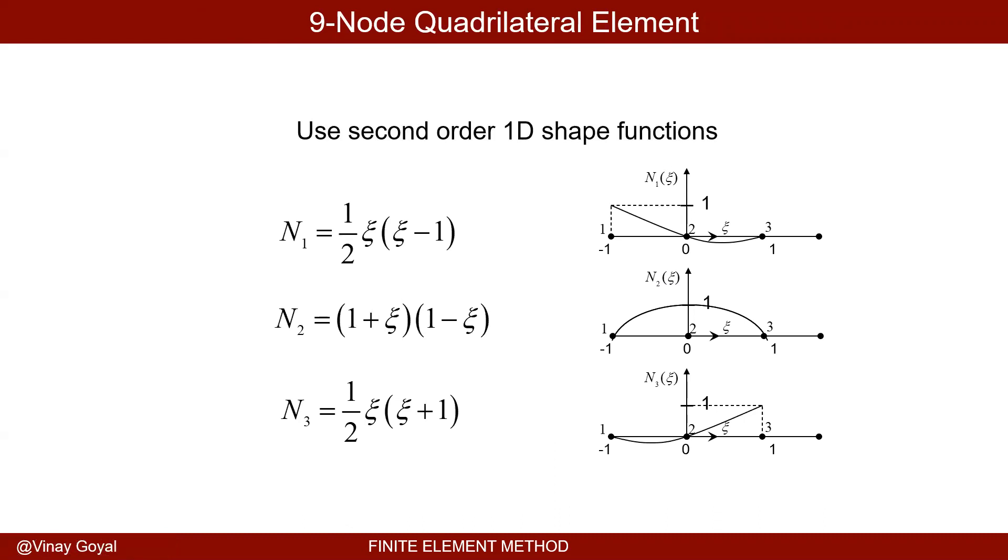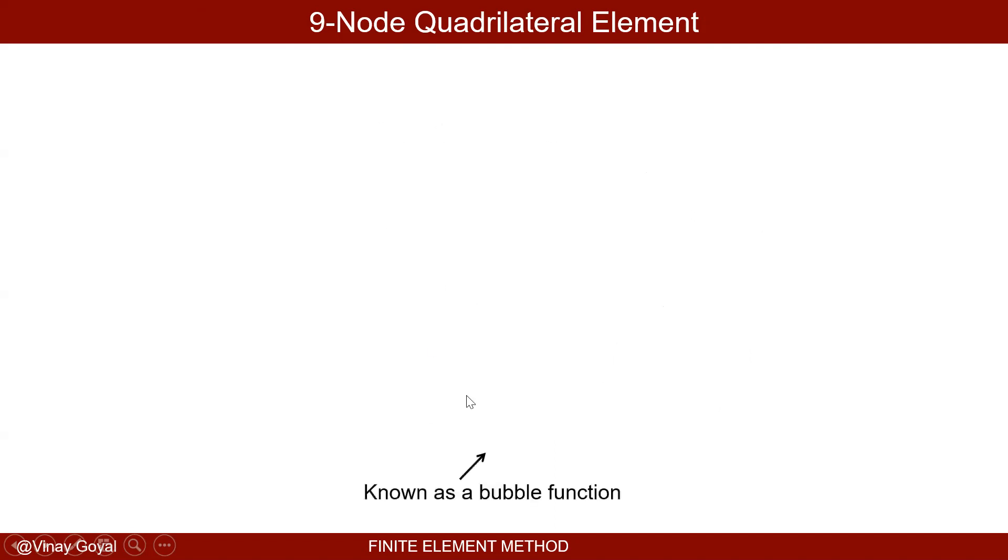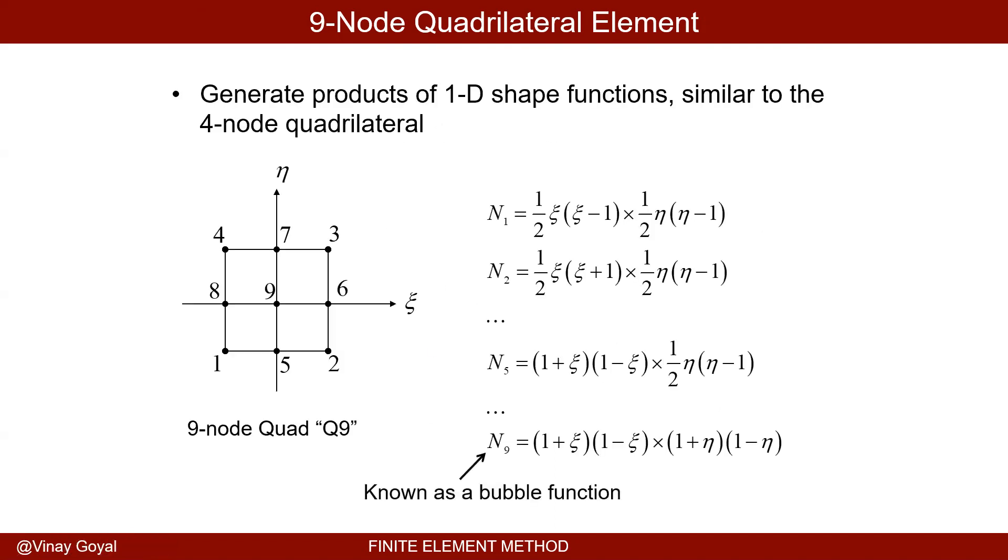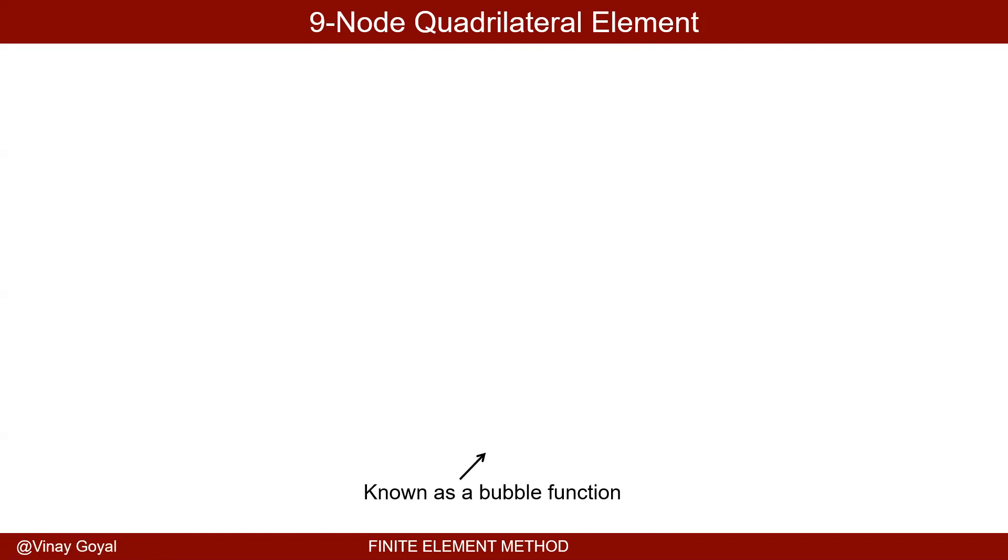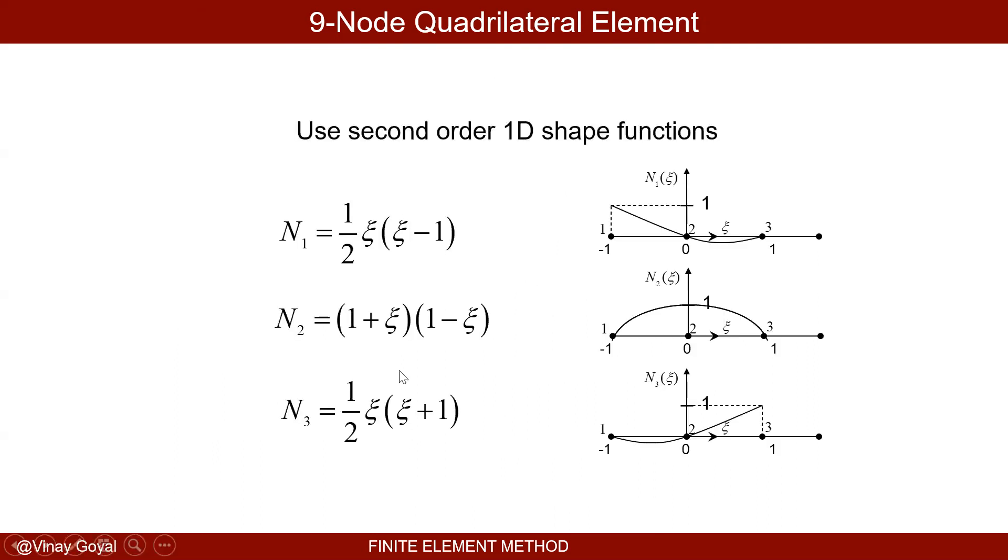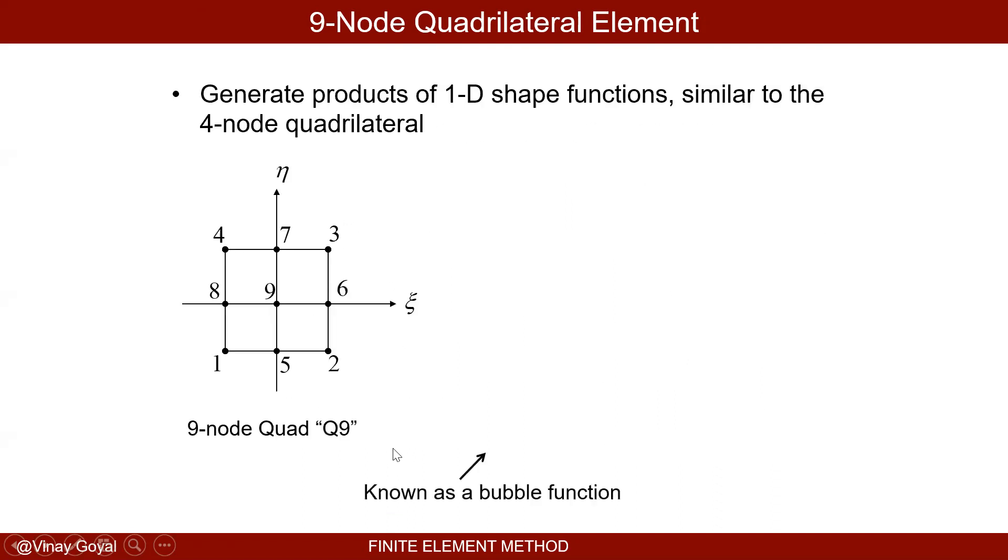You can actually derive what those shape functions look like by looking at the 1D shape functions for quadrilateral elements and multiplying by each other. I'll show you. So you will get all these different combinations. All these are the shape functions. You can derive the way we did it before or just simply take this 1D shape functions for quadrilateral elements and then formulate it by multiplying like that.